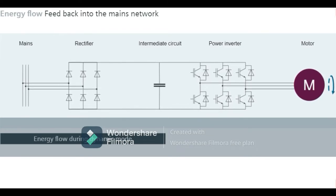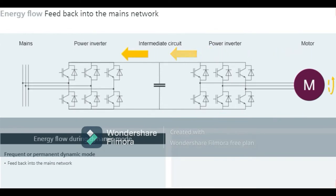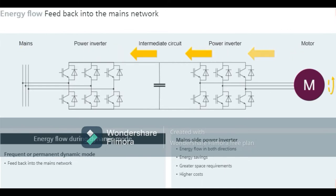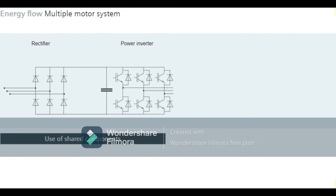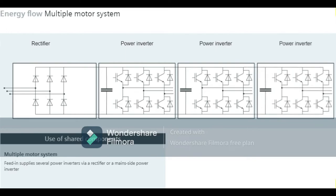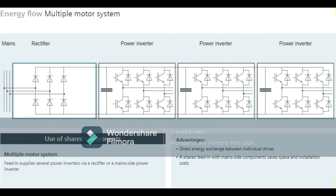If dynamic mode occurs frequently or permanently, a feedback into the mains network is a better solution. A mains-side power inverter allows the energy to flow in both directions, saving energy because the energy fed back into the network is provided to other electrical loads. The mains-side power inverter is the same as a motor-side power inverter in terms of size and structure, however this system has greater space requirements and entails higher costs. A multiple motor system refers to a layout where a feed-in supplies a number of power inverters via shared mains-side components, enabling direct energy exchange between individual drives, shared installation cost savings, and shared use of a brake resistor or mains-side power inverter.